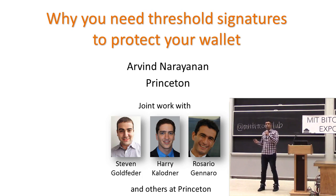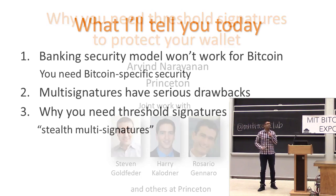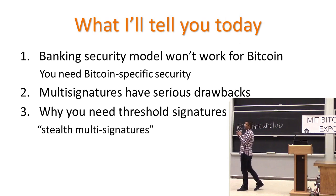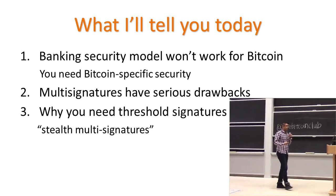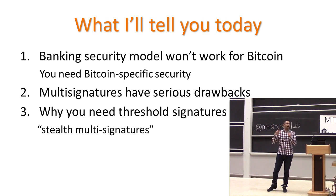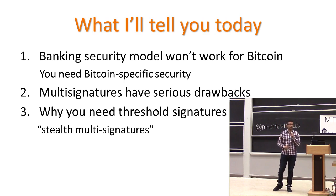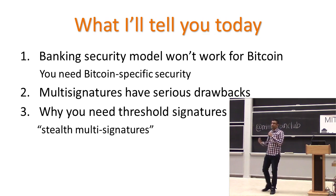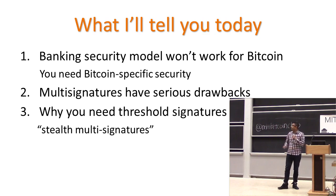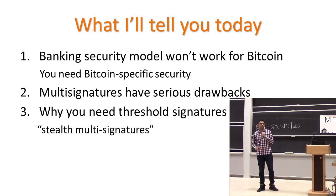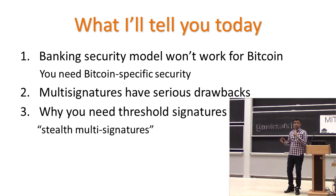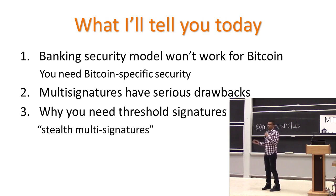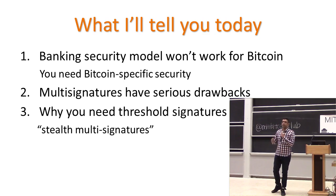This is work with a bunch of people at Princeton — Rosario Gennaro is at CCNY. There are three things I want to tell you today. First, that the banking security model, which has been honed over decades and is very refined with sophisticated techniques and process controls, doesn't translate over really well to Bitcoin. Second, that multi-signatures is a great option but has serious drawbacks. Third, what threshold signatures are and why they're a form of stealth multi-signatures and why you need them.